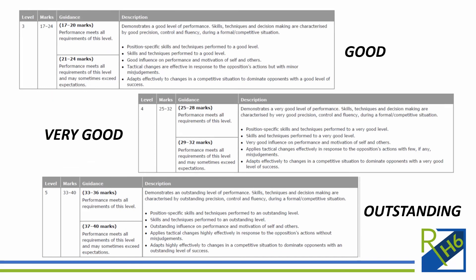The way it's marked is banded into five different bands, dividing the marks with language that changes in each band as to whether you are competent, basic, good, very good or outstanding at the skills. What is most important at A level — in comparison to if you've done GCSE PE — is that you are assessed in your application. We're not looking at skills in isolation in drills; we're looking at skills as a whole and how you apply them in a competitive context.